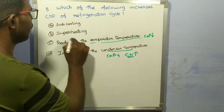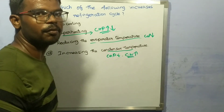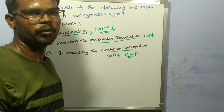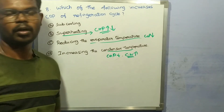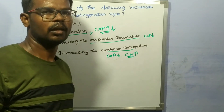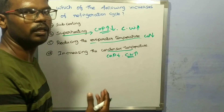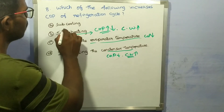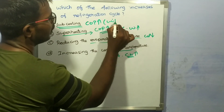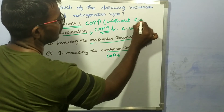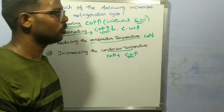Superheating may increase or decrease COP depending on the refrigerant used — for ammonia it may increase, for others it may decrease — and it also increases compression work. Subcooling is the only technique that increases COP of the cycle without increasing compression work. So option A is correct — subcooling.